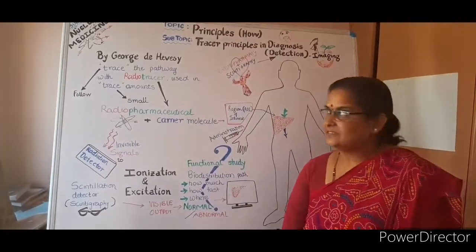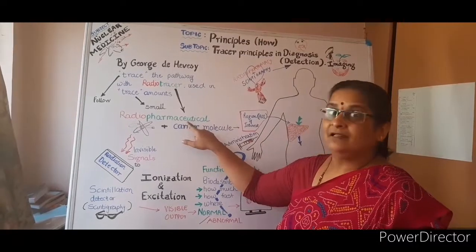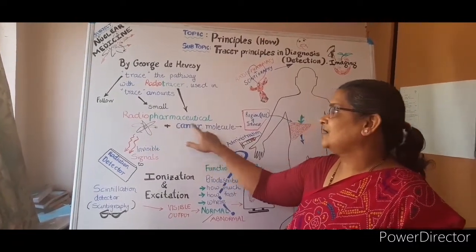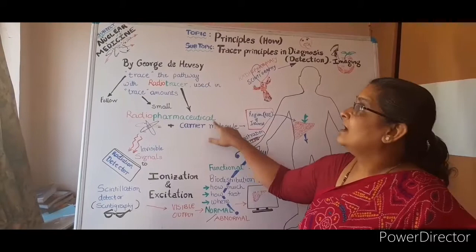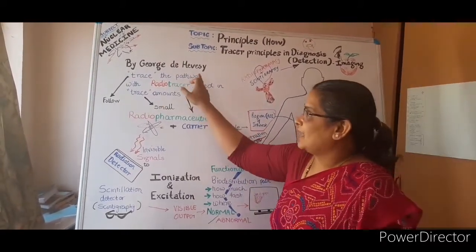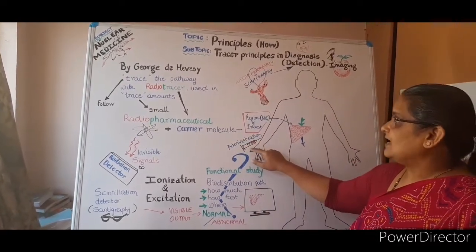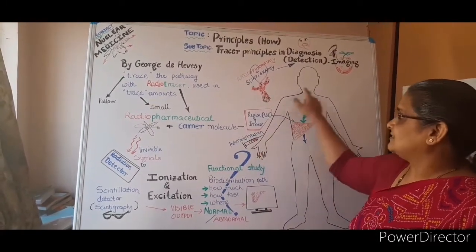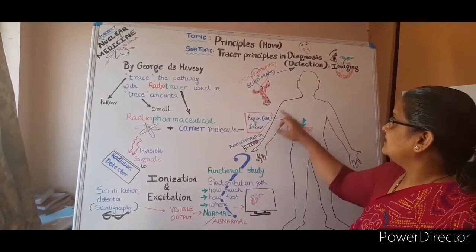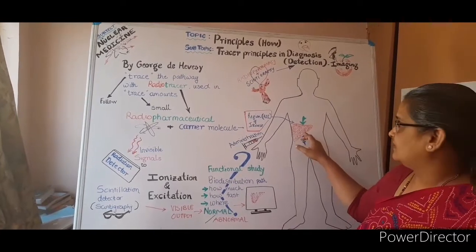As per the tracer principle, the radiotracer — or the radiopharmaceutical, that is the radioisotope tagged to the carrier molecule — can be used in small amounts to trace the pathway. This small amount is administered intravenously, and in the case of the human body, it reaches the liver — in this case the region of interest is the liver.